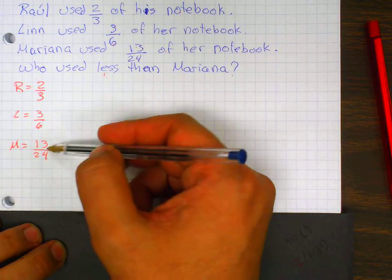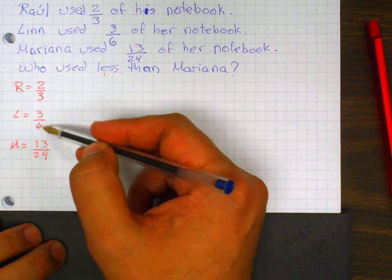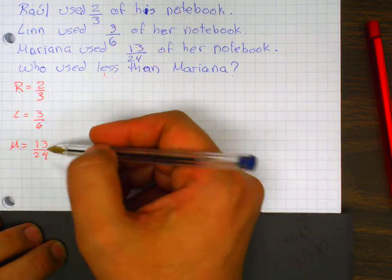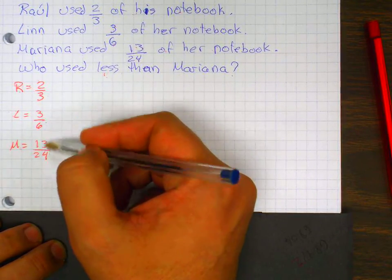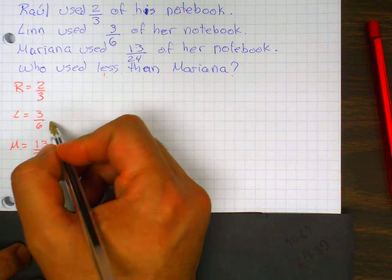To compare these fractions, the first thing that I need to do is to change them so they all have the same denominator. Which denominator could be the one that I need to use as a whole? So I need to change the other ones.